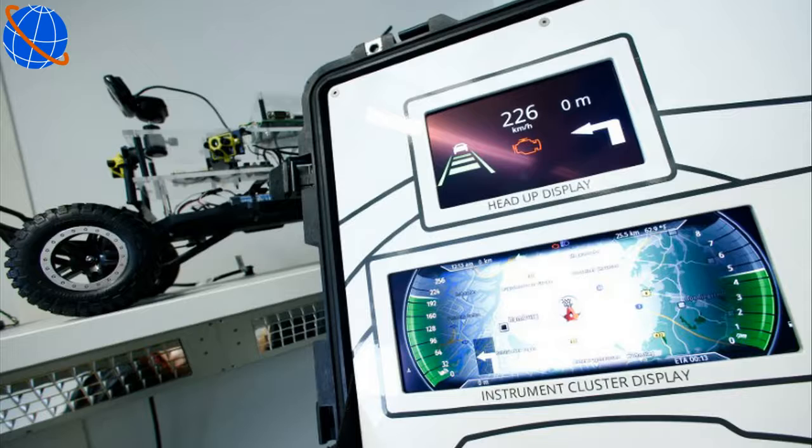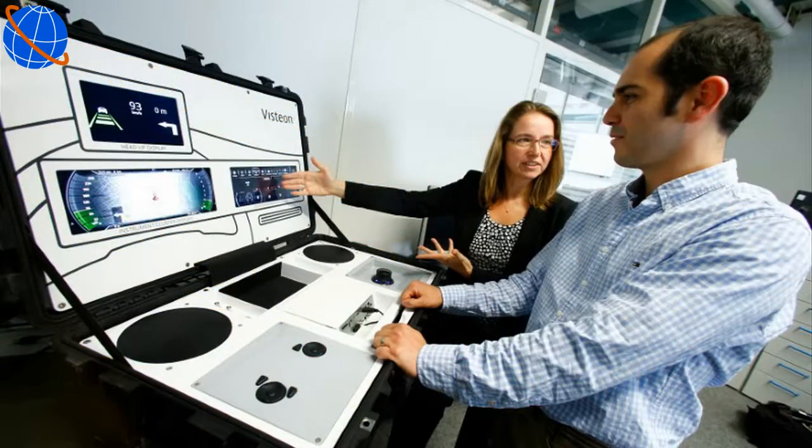As automotive cockpits become crammed with ever more digital features such as navigation and entertainment systems, the electronics holding it all together have become a rat's nest of components made by different parts makers. Vistian is among a slew of suppliers aiming to make dashboard innards simpler, cheaper and lighter as the industry accelerates toward a so-called virtual cockpit.